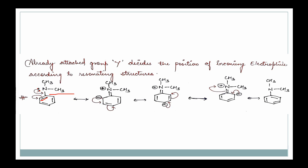If there is delocalization of this lone pair, it goes into the ortho position and the para position. Our electron density at ortho and para positions is increasing. So where will the electrophile go? The electrophile will go to the ortho and para positions. We have done nothing except resonance — and after resonance, we see where the negative charge is, because negative charge attracts the electrophile. That is where the electron density is highest.